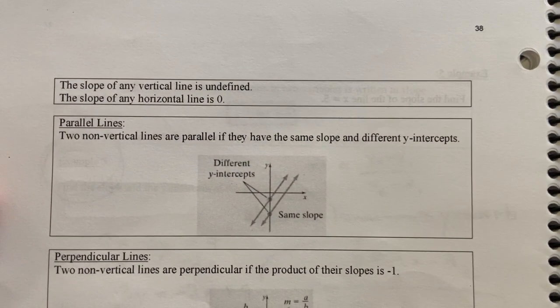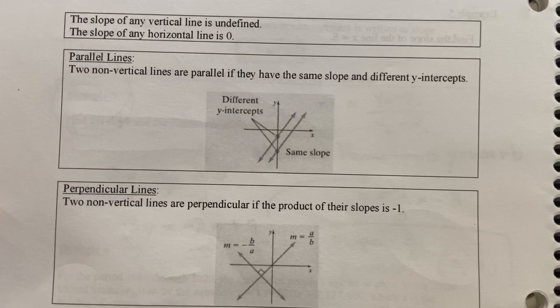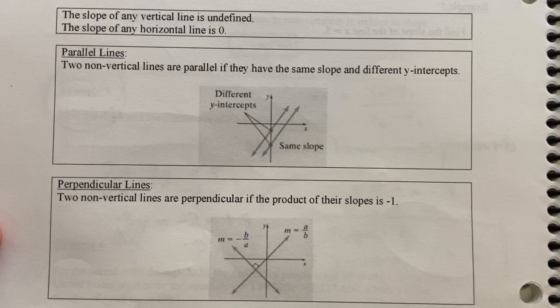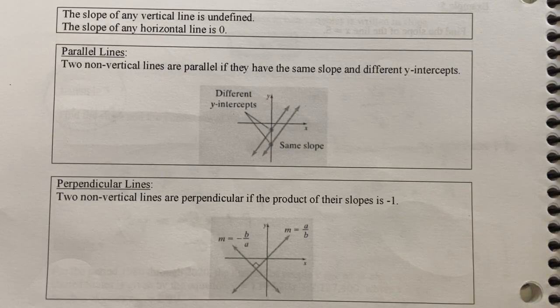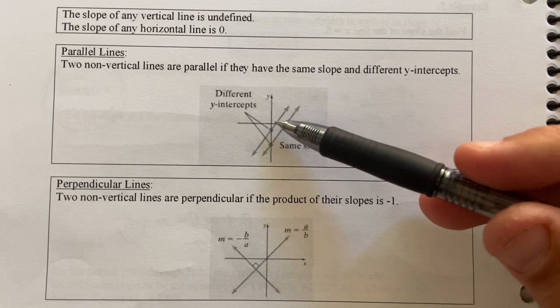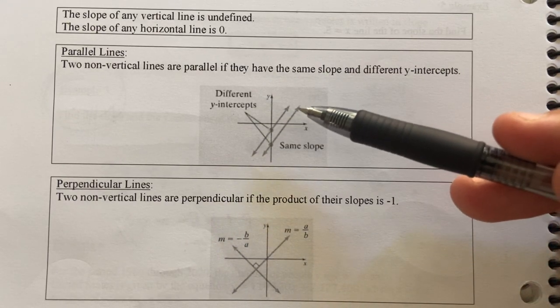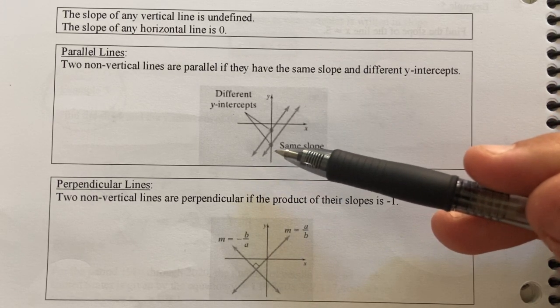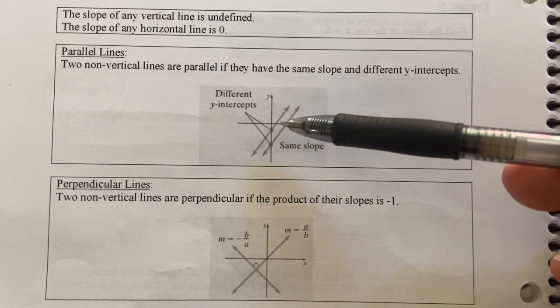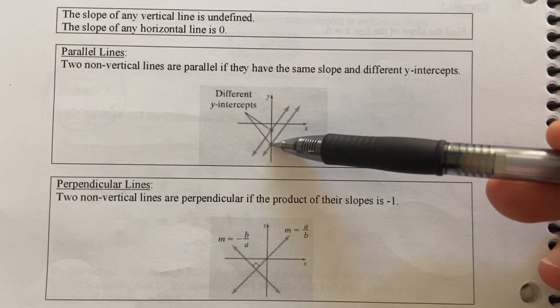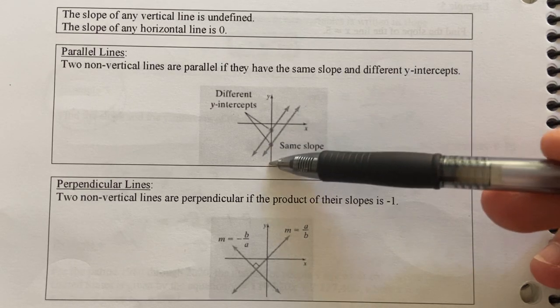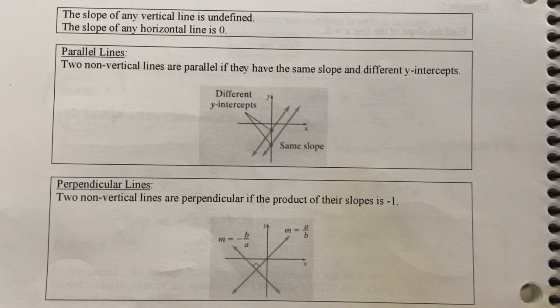Moving on to page 38. Once we have multiple lines present, there are different orientations a pair of lines can show. Parallel lines are two lines on one set of axes oriented so they will never intersect. The mathematical description is that they have different y-intercepts but the same slope — that's our mathematical definition of parallel.